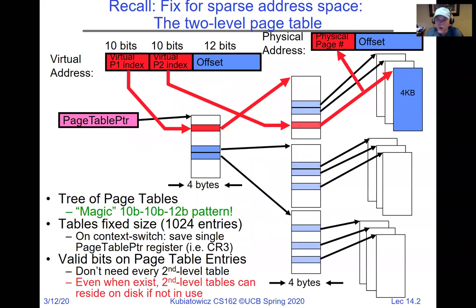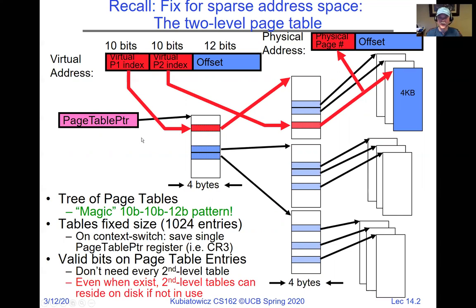If you remember from last time, we were talking about page tables. This is a particular structure I like to call the magic 10-10-12 pattern for 32 bits. Ten bits give you 1,024 entries in the top-level page table, 1,024 entries in the second-level page table, pointing at four-kilobyte pages. With four-byte page table entries, 1,024 times four gives us a 4K page — each piece is the same size as the pages, which means we can actually page out parts of the page table.